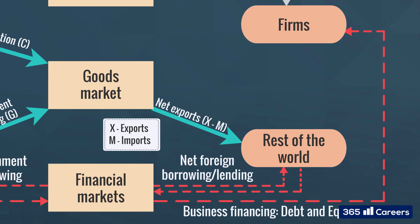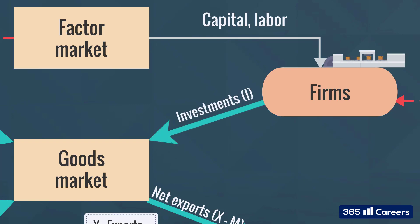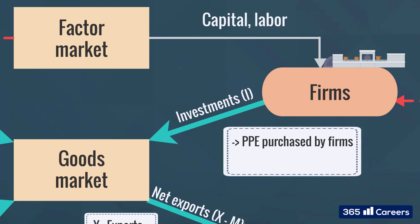Foreign countries are another principal player on the market for goods and services. The funds firms raise from the financial markets, plus the capital and labour resources they receive from the factor market, allow them to produce goods and services. Part of the income generated is invested in the goods market in the form of capital goods, also known as property, plant, and equipment. The business sector also buys machines and tools from the goods market to build productive capacity. These investments in capital goods are usually denoted by I.